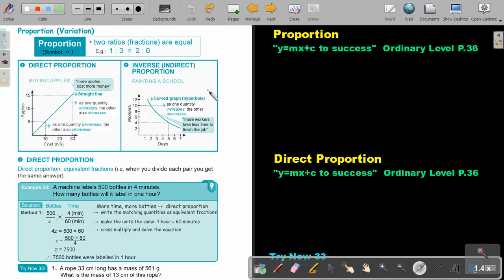But this is different with indirect proportion. Indirect proportion is, for example, painting a school. It's more like a curved graph. So it's a hyperbola, which we will look later in Chapter 6. If you take 10 workers to paint Paris's secondary school, it will take you two days. If you reduce the workers, and you only take four workers to paint the school, the days will increase to five days. So as the workers decrease, the days increase. So it has opposite movements. So more workers take less time to finish their job. So as one quantity increases, the other decreases.